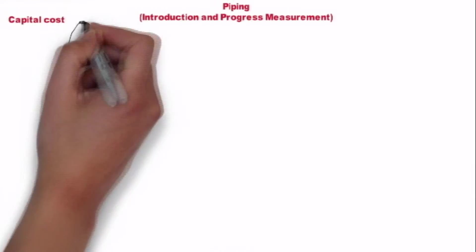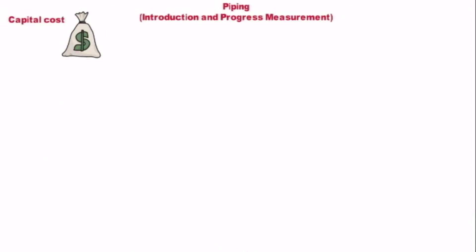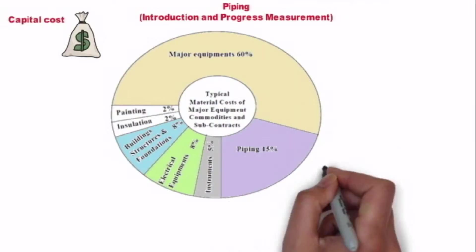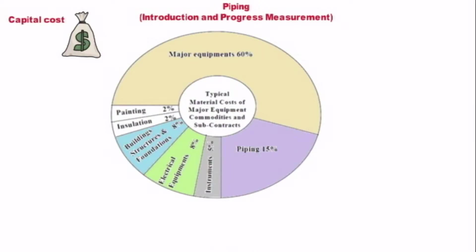The pie chart shows the relative cost of various material components of the plant. As you can see in the chart, piping accounts for nearly 15 percent of overall material cost.